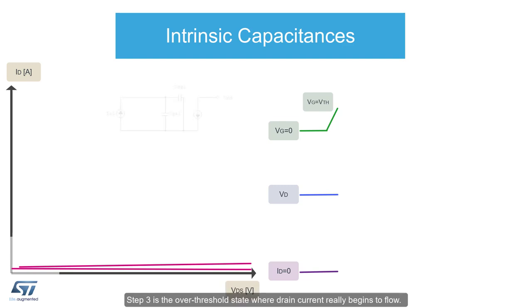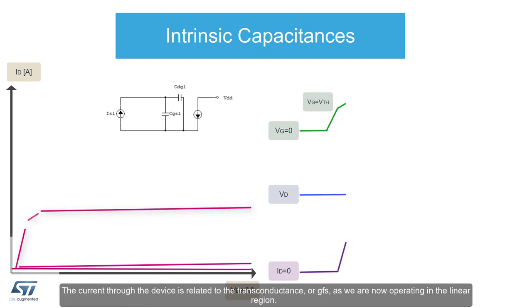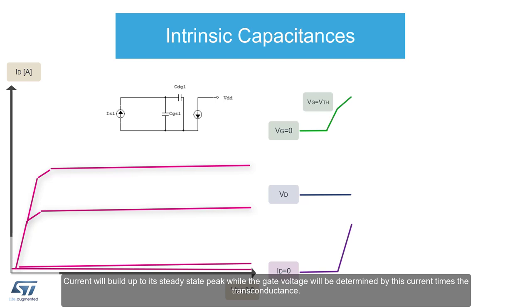Step three is the over threshold state where drain current really begins to flow. The drain voltage however still remains at VDD as CISS continues to charge. The current through the device is related to the transconductance, or GFS, as we are now operating in the linear region. Current will build up to its steady state peak while the gate voltage will be determined by this current times the transconductance.